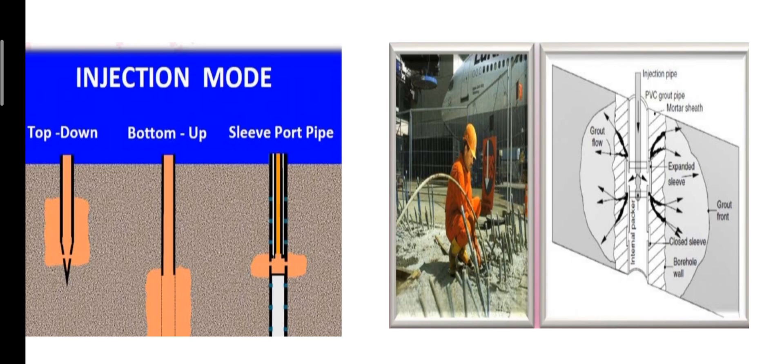After the weak grout has hardened, a grout injection pipe with two packers is inserted into the sleeve port pipe, allowing the grout to be injected through one port at a time. The injection pipe is then raised or lowered to another port and the process repeated.